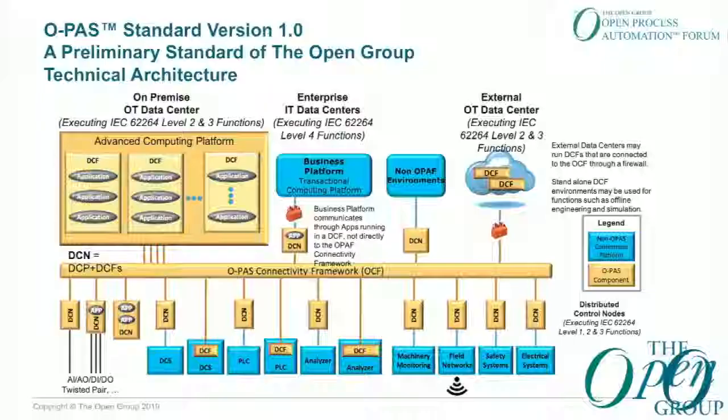The external OT data center connectivity is also recognized. You may have functions sitting in an on-premise or off-premise data center that are running Distributed Control Functions, and you want the on-premise software to be able to connect and leverage those in its operation.